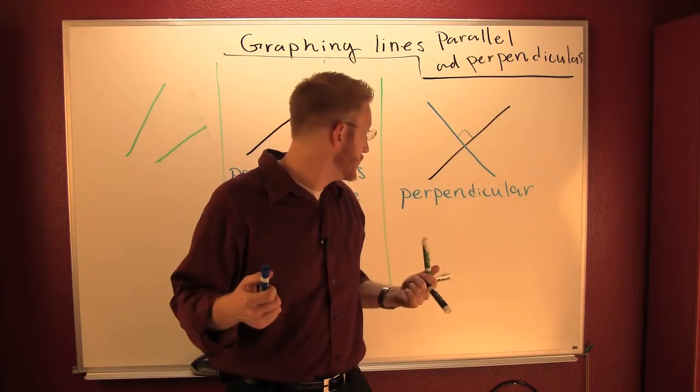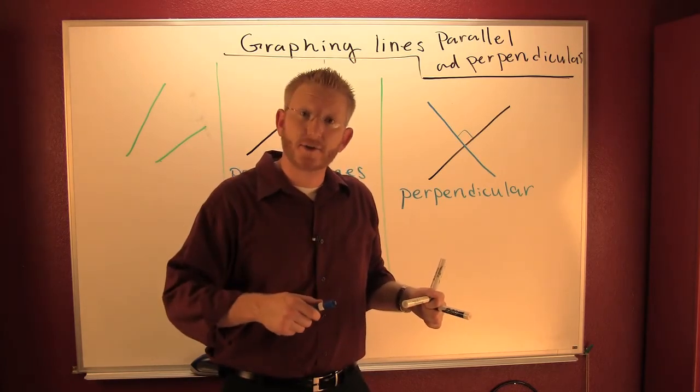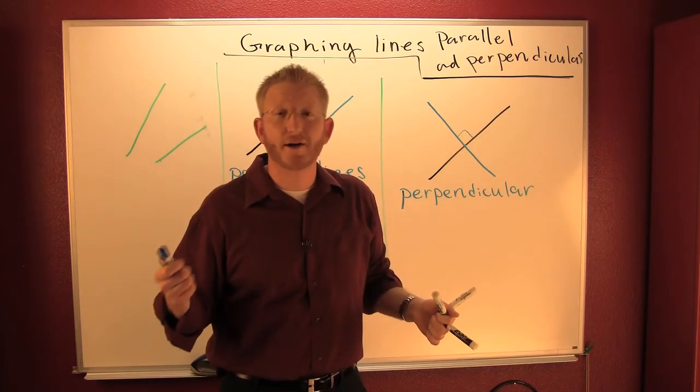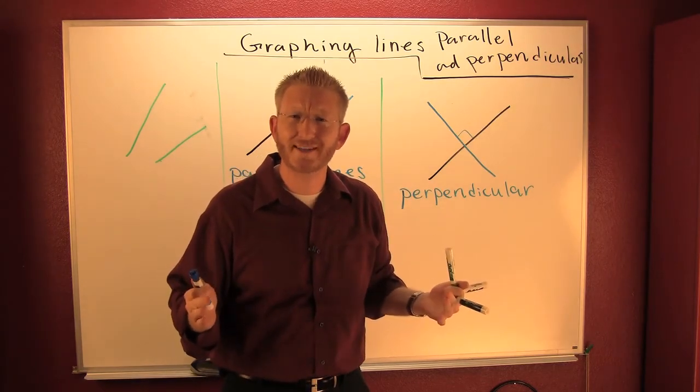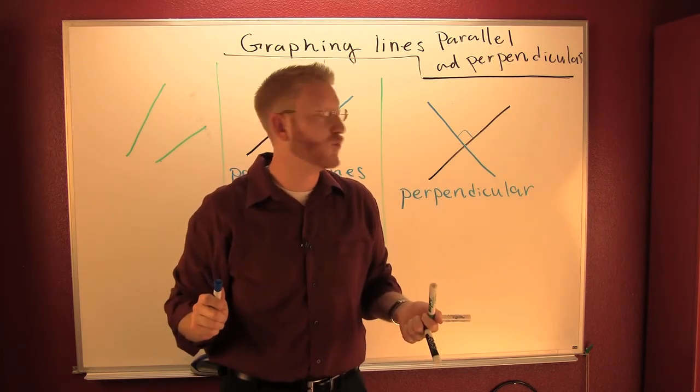And it just so happens that if a slope is perpendicular to another slope, it's the number that when multiplied by the number that product is minus one. What? I know. It's a little bit abstract and kind of wordy.